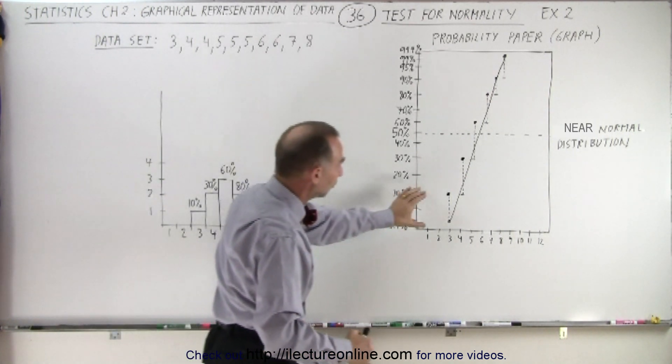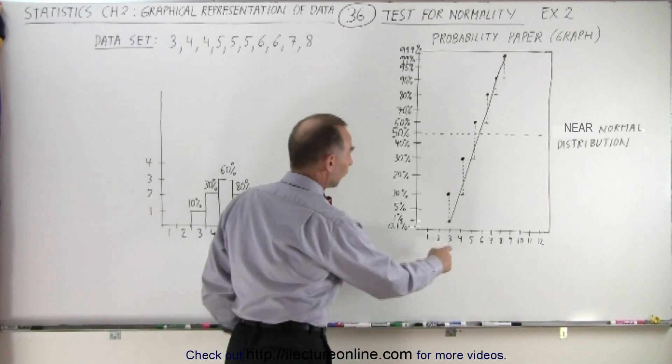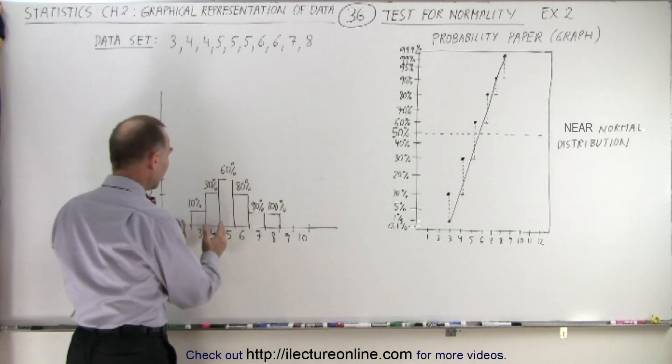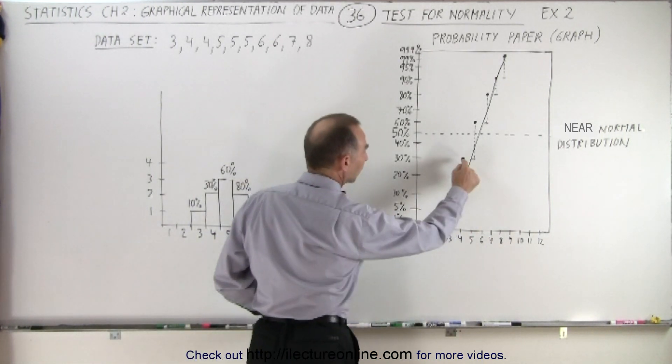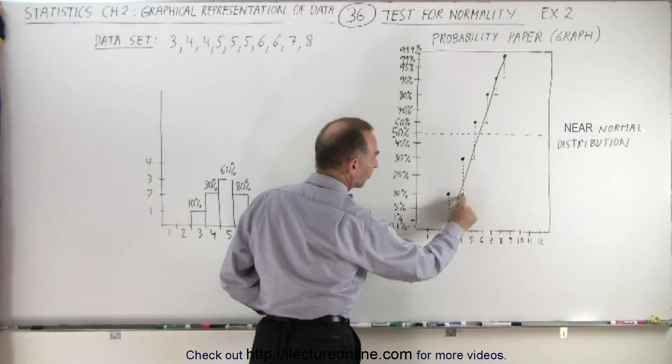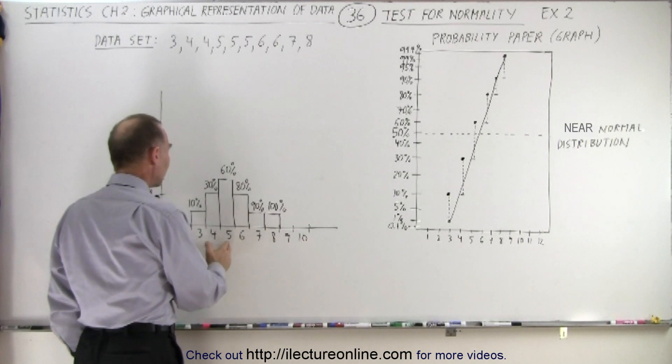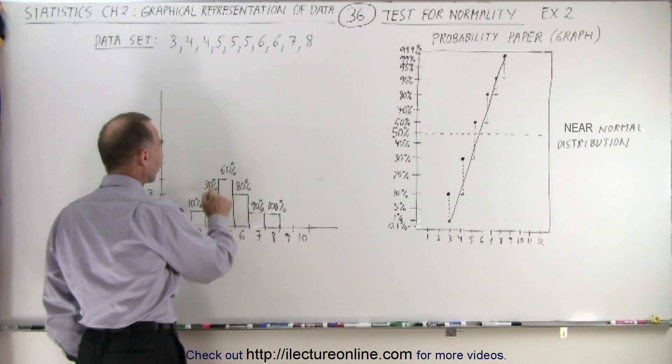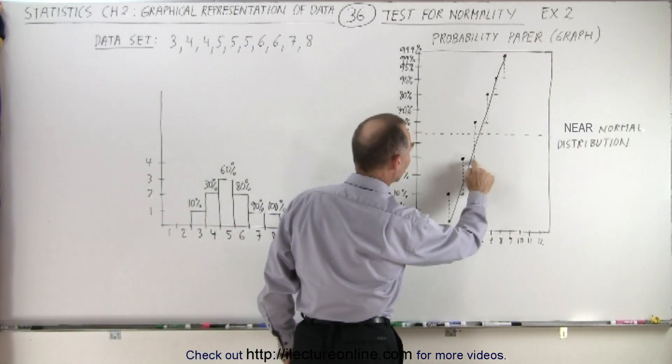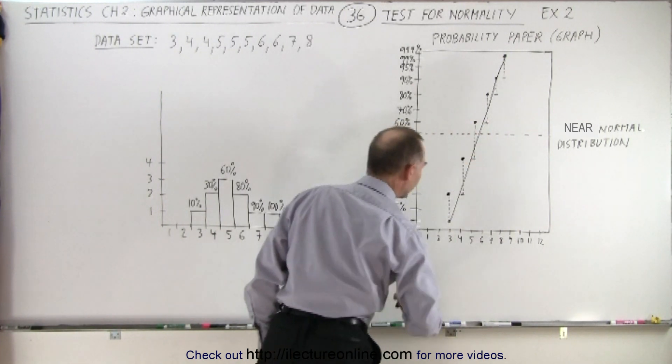For the number 4, you now have 30% of your data points, so you draw a dot at 30%, starting from 10% to 30% to show the range. With the number 5, there are three of them, so you start at 30%, go up to 60%, and put the dot there.